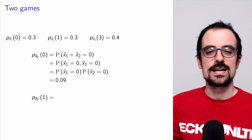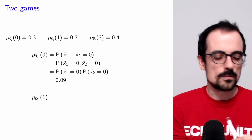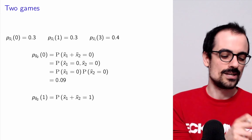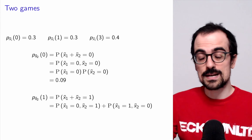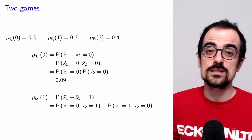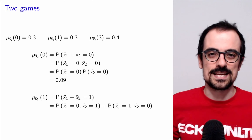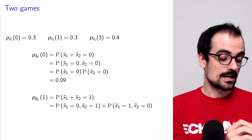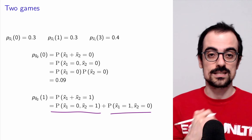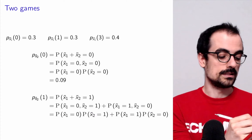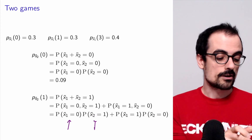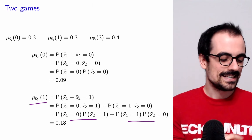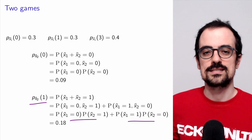Now let's look at what happens for the value 1, which is a little more interesting. There are two ways in which the sum can equal 1: the first game can be 0 and the second 1, or the first game can be 1 and the second 0. These two events are disjoint, so we can write the probability of their union as the sum of probabilities. Applying independence, we get a sum of products of probabilities. Each probability equals 0.3, so P(S2=1) = 0.18.